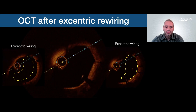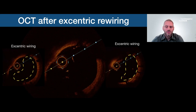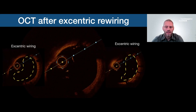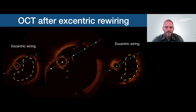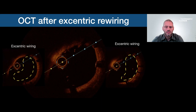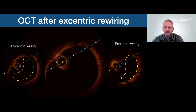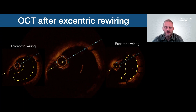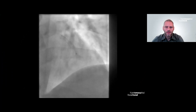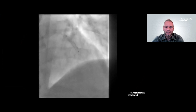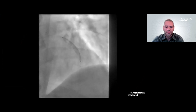I then used the OCT catheter more distally to control for the rewiring. After a few attempts, I was able to eccentrically rewire the stent. You can see the struts surrounding the OCT catheter at different heights of the prolapsed stent. The OCT catheter then passed easily, facilitated by the guide extension catheter.